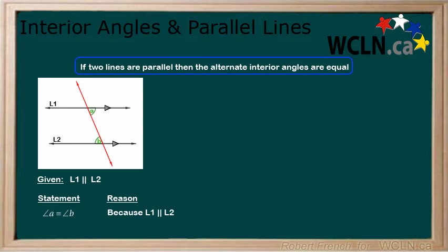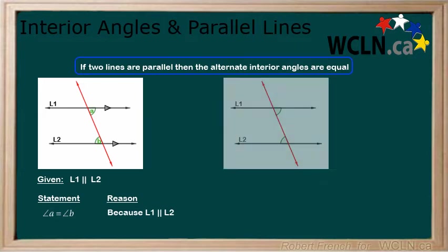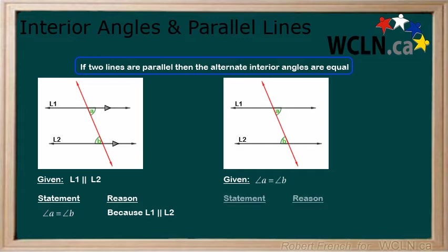This can go the other direction as well. Here, we have two lines crossed by a transversal and have identified two angles A and B which are alternate interior angles. We are given the fact that these two angles are equal. Therefore, we can say that the two lines are parallel because the alternate interior angles are equal.